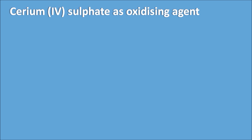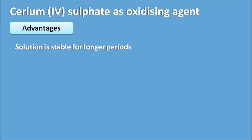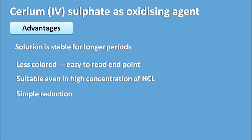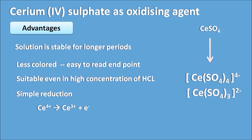Cerium-4 sulfate as an oxidizing agent has several advantages: the solution is stable for longer periods, it is less colored making it easy to read the end point, and it is suitable even in high concentrations of HCl — so HCl does not cause any instability. It involves a simple reduction reaction: Ce4+ → Ce3+ + e−. Cerium sulfate during titration exists as anionic complexes like [Ce(SO4)4]4− or [Ce(SO4)3]2− in the presence of sulfuric acid. Therefore, cerium sulfate existing as an anionic complex is the correct answer.